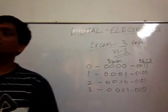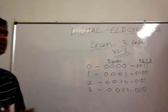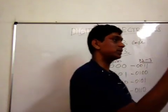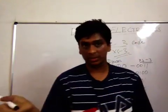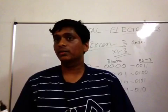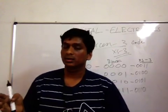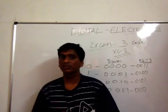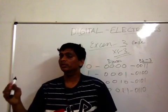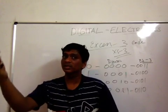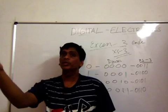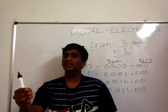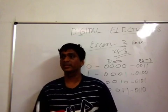The XS3 code for any decimal number is just three more than the normal binary representation of that number. So for any decimal value, you take its normal binary equivalent and add three — that is the XS3 representation. For example, for decimal 100, the XS3 code is simply three more than 100 in binary.